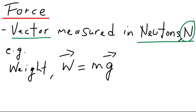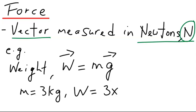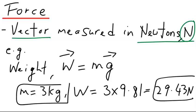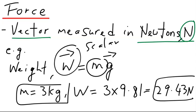If you have a mass of 3 kilograms, then the weight of this mass is 3 times 9.81, which is 29.43 Newtons. So mass is a scalar, and weight is a vector.